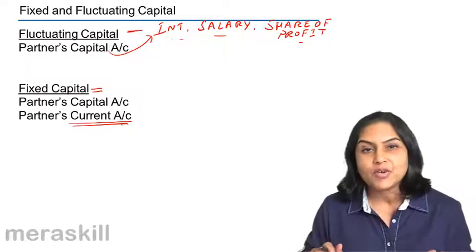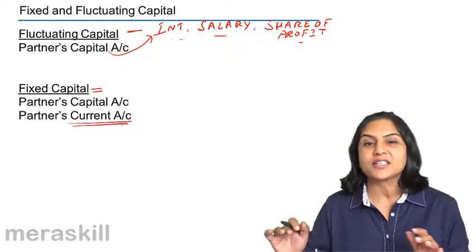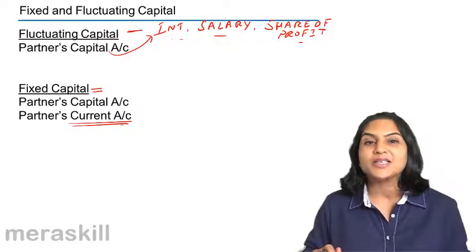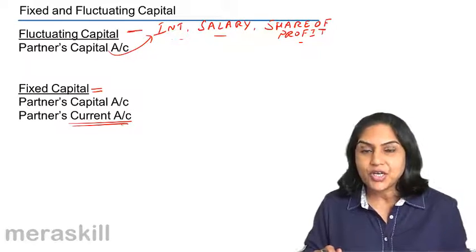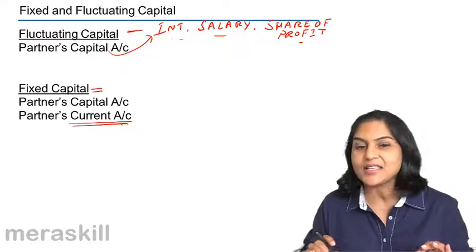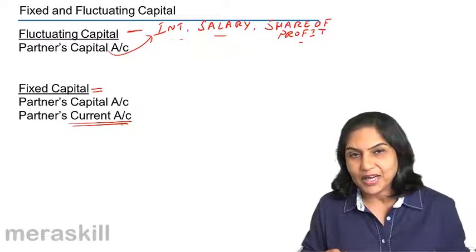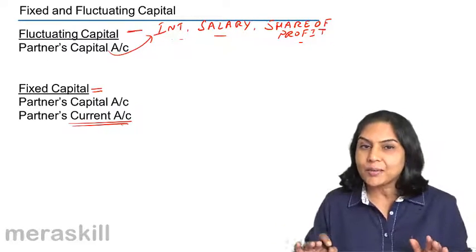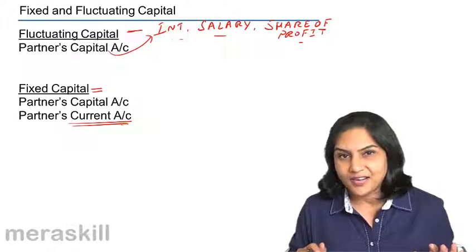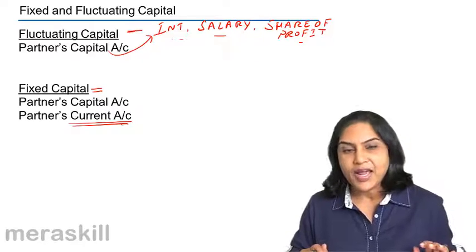All other adjustments with respect to interest on capital, interest on drawings, salaries, commission, profits, sharing of profits, etc., are all routed through the partner's current account. So in a balance sheet, we would have not only the partner's capital account, which is fixed year after year unless they bring in additional capital or withdraw some amount, but also another account called partner's current accounts. So each partner will have a capital account and a current account.